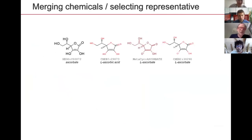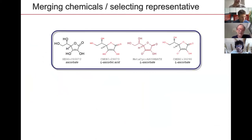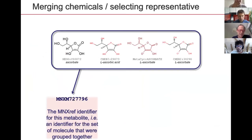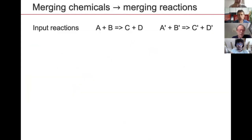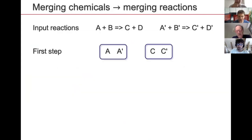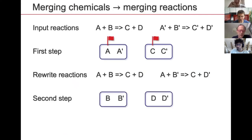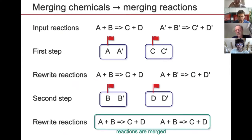When we have a set of chemicals, the idea is to build a set to identify it with an MNXref identifier and choose the best representative. Starting from this, and from a collection of input reactions, you can progressively merge metabolites, rewrite the reactions, go through another step of merging metabolites, and at the end end up with reactions being merged.